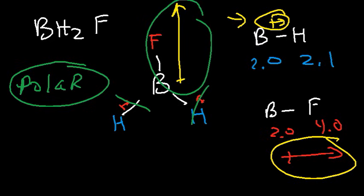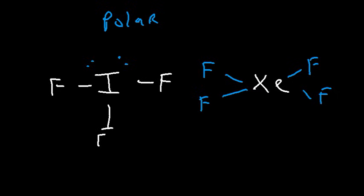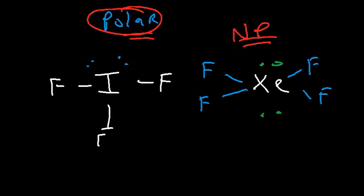If all outer elements are identical with no lone pairs on the center atom, the molecule is nonpolar. With a lone pair present, it is polar about 90% of the time — unless the lone pairs are symmetrical. IF3 is polar because lone pairs are only on one side. Xenon tetrafluoride has two lone pairs opposite each other, so they cancel and the molecule is nonpolar. Look for symmetry: lone pairs on one side equals polar; lone pairs opposite each other equals nonpolar.